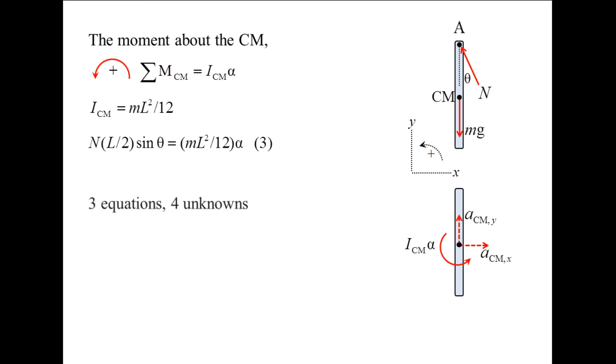We have used the three equations of motion, but have four unknowns: N, alpha, and the two components of the acceleration of the center of mass. Additionally, we want to find the acceleration of point A. We can obtain two additional equations by examining the relative motion between point A and the center of mass.